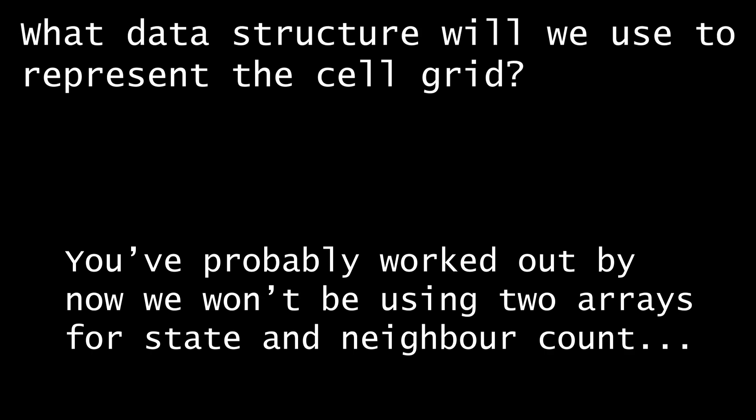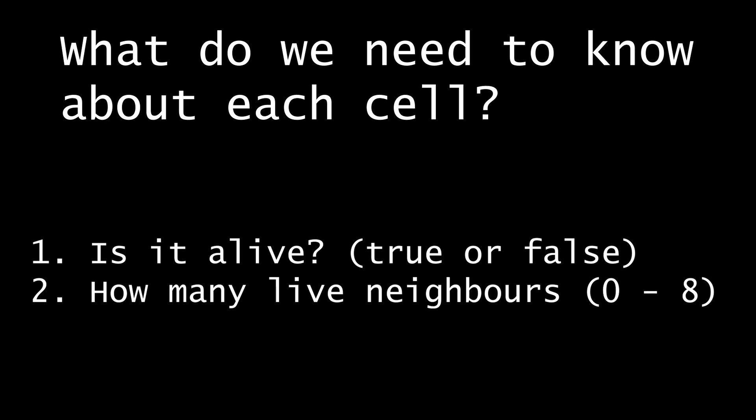Before that, how are we going to represent our grid? What data structures should we use? We know now that we need to store two things about every cell: one, is the cell alive or dead? And two, the number of living neighbour cells. To be efficient, we should also try and use as little memory as we can, so let's consider each of these variables in turn.